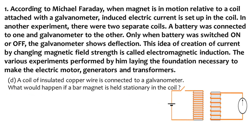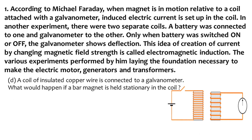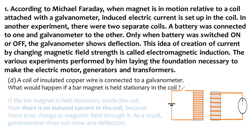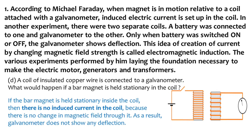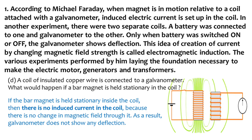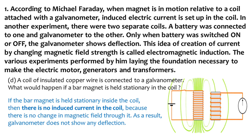Question D: a coil of insulated copper wire is connected to a galvanometer. What would happen if a bar magnet is held stationary in the coil? We have understood that induced current is produced when the magnet moves inside and outside the coil. If the magnet is kept stationary, then there is no induced current produced in the coil, so there will be no change in the galvanometer. That's the end of the first case study.